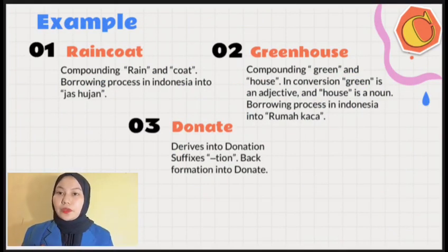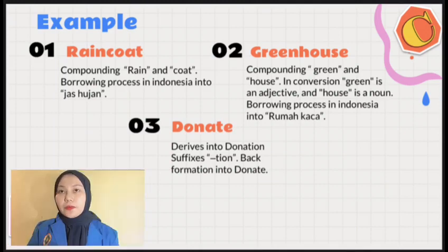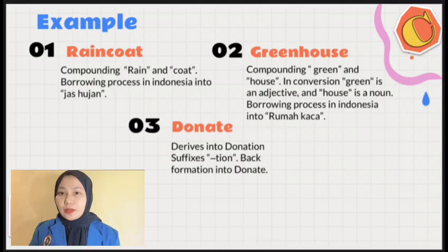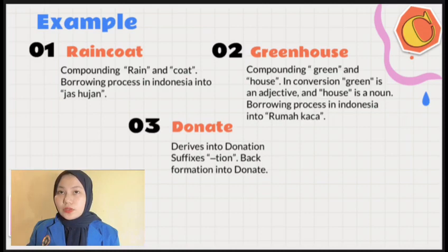The first example is raincoat — compounding rain and coat — and borrowing process in Indonesian into jas hujan. The word rain serves as the descriptive element, indicating the purpose or situation for which the coat is designed.